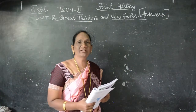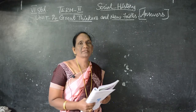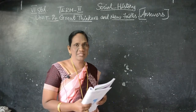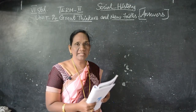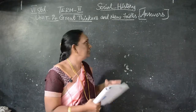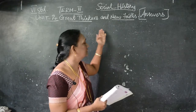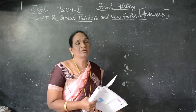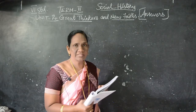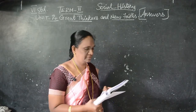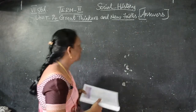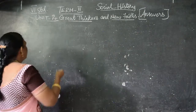Good morning children. This is for 6th standard. I already gave you the answers for Term 2, second lesson, history — 'The Great Tinkles and the New Fates.' Till Roman numeral 6, we saw answers in 2 or 3 sentences. Now I am going to give you the detailed answers.